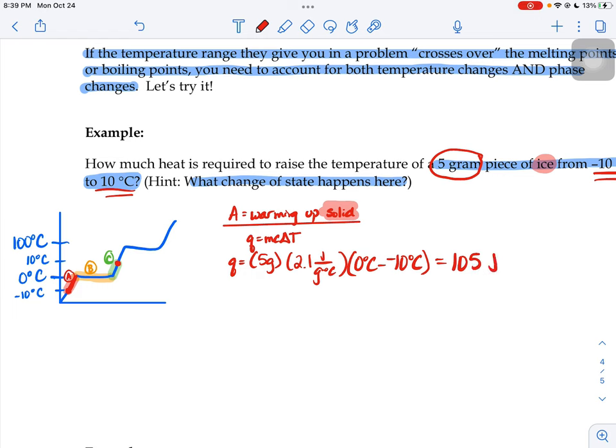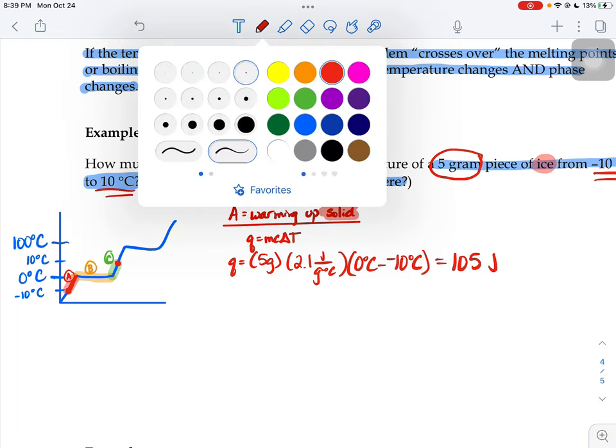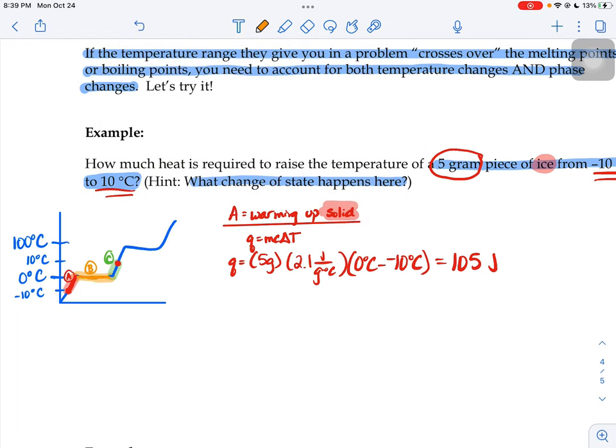I'm not going to do any sig fig rounding yet, because this is one piece of a bigger puzzle. Next up, I'm going to look at how much energy it takes to go across section B on my graph. Section B is when our substance is melting. We can't use our MC delta T equation because there is no delta T. It holds steady at zero degrees that whole time.